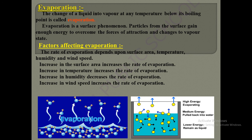An increase in temperature increases the rate of evaporation. During summer, water in ponds and lakes evaporates much faster compared to winter — if temperature is high, evaporation rate is also high. An increase in humidity decreases the rate of evaporation. In winter, moisture content is higher, so evaporation rate is very low. In summer, moisture content is low, so evaporation rate is very high.